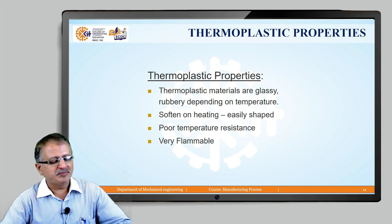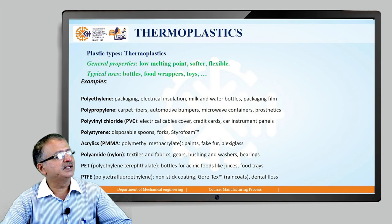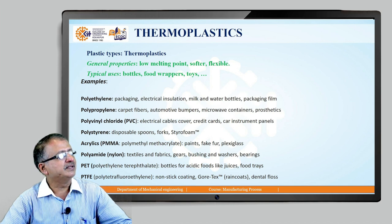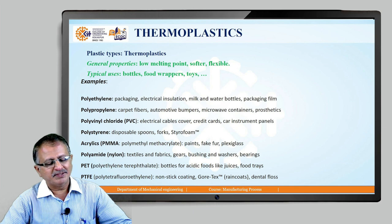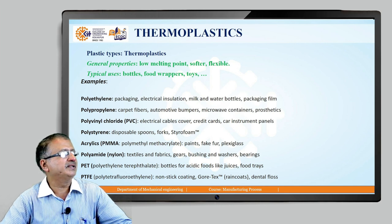As far as thermoplastic properties are concerned, they are glassy or rubbery depending upon the temperature range being used. Softening and re-shaping is very easy, but they have poor temperature resistance and are very flammable. General properties include a low melting point, and they are softer and flexible. The application range depends upon the type of thermoplastic material being processed. Examples include polypropylene, polystyrene, polyvinyl chloride, and acrylics. For instance, polyethylene is used in packaging, electrical insulation, milk bottles, and water bottles.